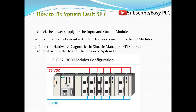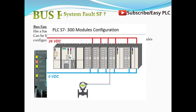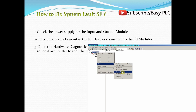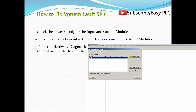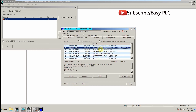How to fix system faults? Check the power supply of the input and output modules. Look for any short circuit in the I/O devices connected to I/O modules. Open the hardware diagnostics in the SIMATIC Manager or TIA Portal to see the alarm buffer and spot the reason of the system fault.